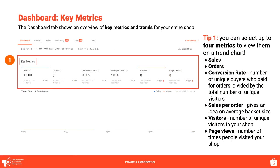Moving to dashboard key metrics: we have sales, orders, conversion rate, sales per order, visitors, and page views. Each metric might sound confusing, but you can hover your mouse over the question mark and it will explain each one. Conversion rate is the number of unique buyers who paid for orders divided by the total number of unique visitors — basically, out of all the buyers who look at your account, how many actually buy? Sales per order gives an idea of average basket size — do they buy one item or a combination?